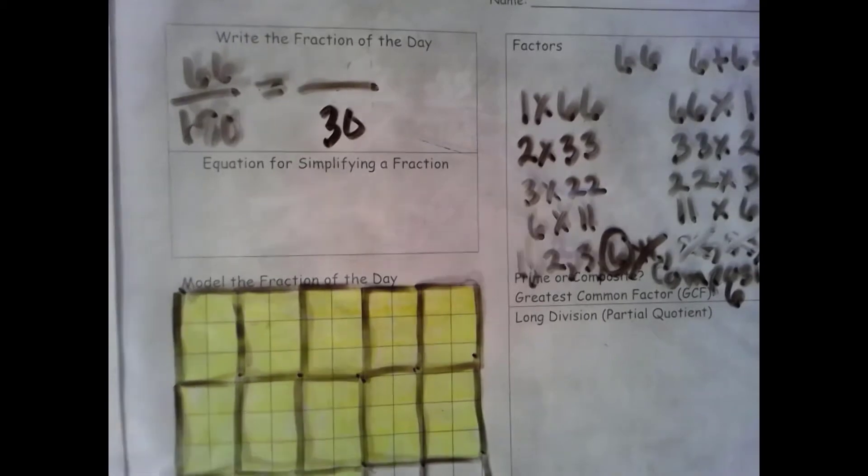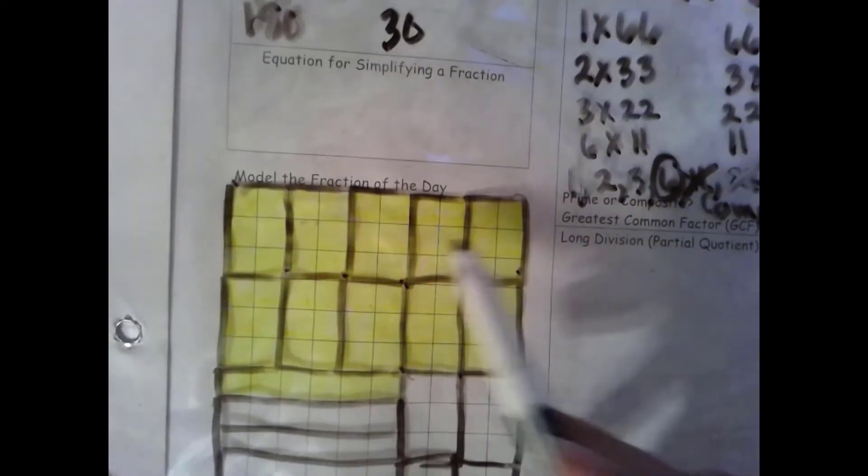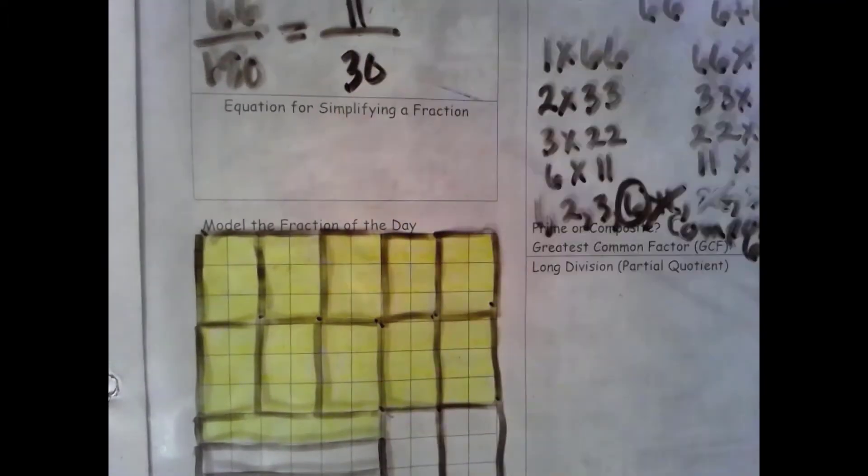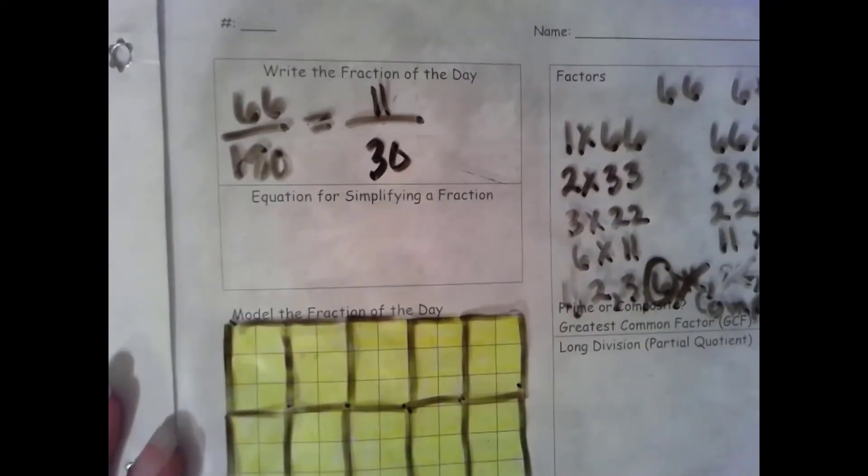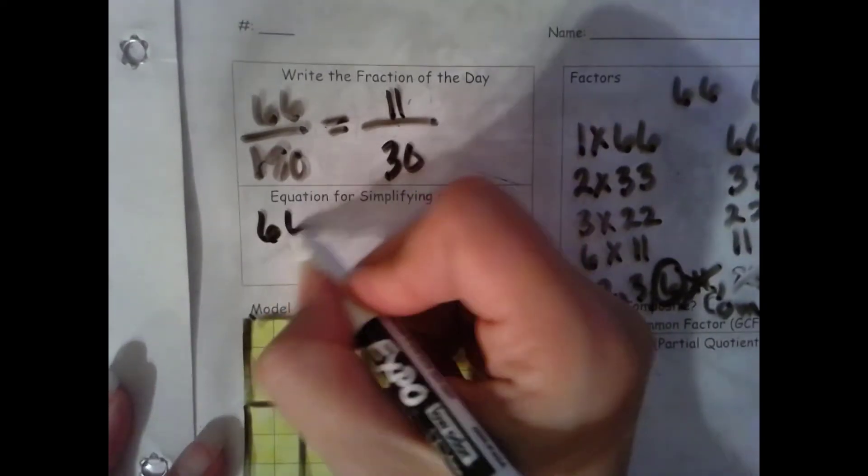There are 30 groups of 6 and we have 1, 2, 3, 4, 5, 6, 7, 8, 9, 10, 11 shaded in.